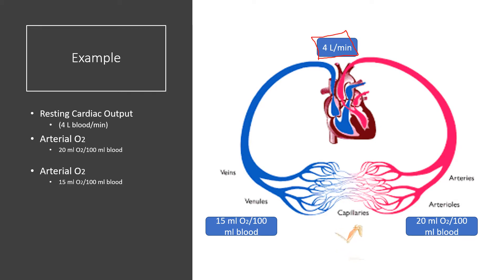As we said in that cardiac output video, a resting cardiac output of four to five liters per minute is pretty normal for most individuals.